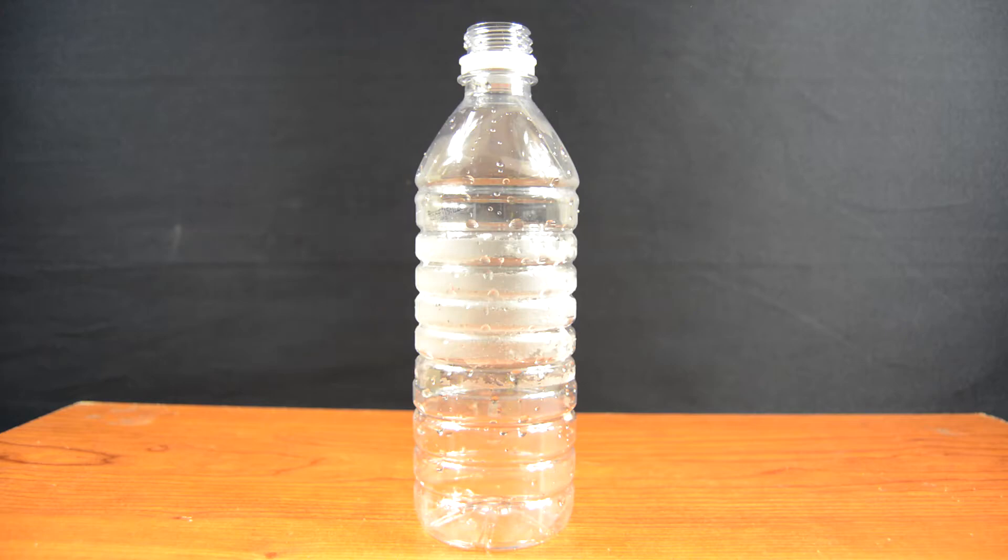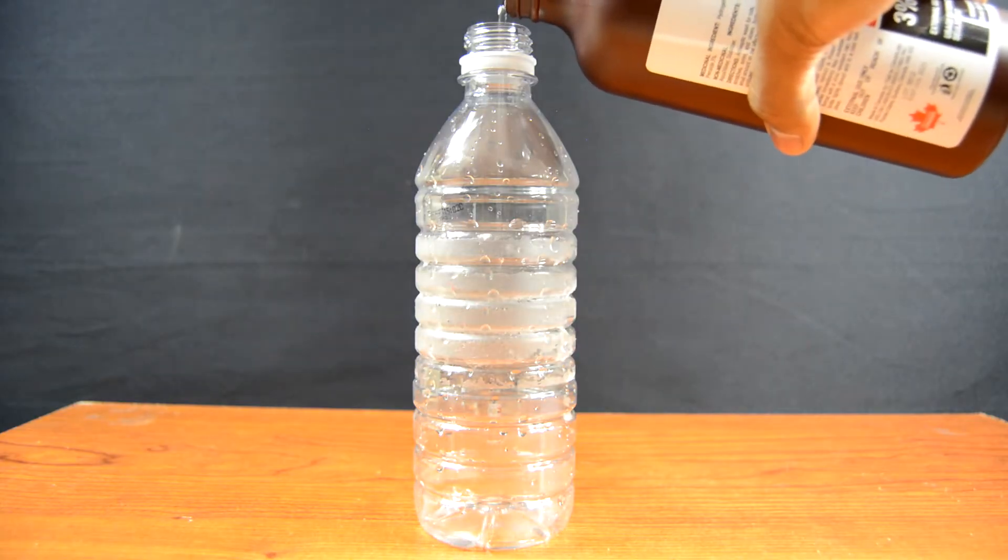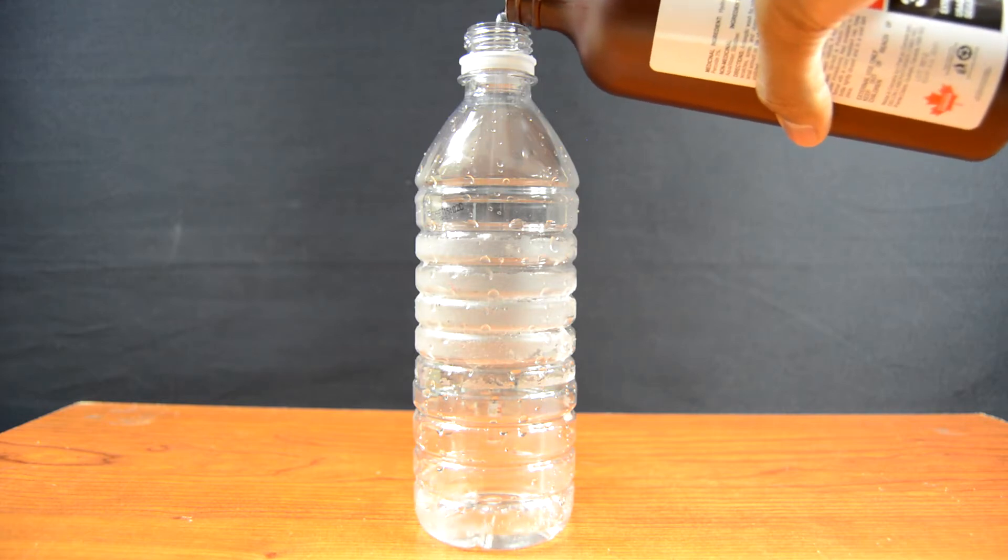Now put your yeast to the side and start working on the second solution. For this you need hydrogen peroxide, a couple of drops of food coloring, and dish soap.